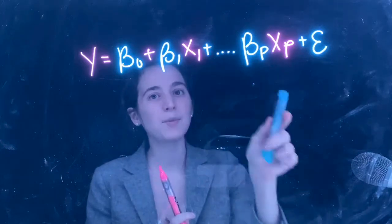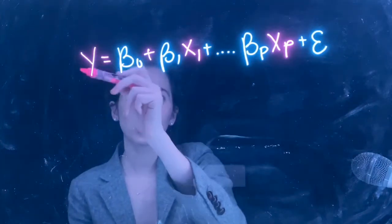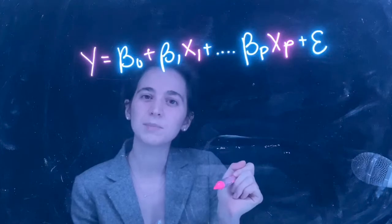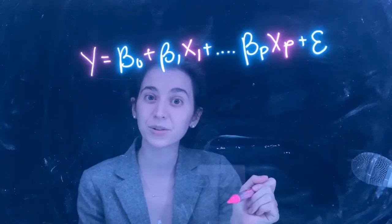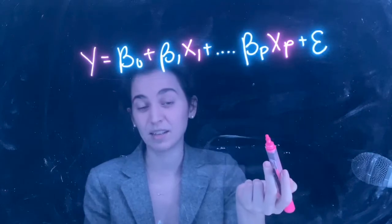This is the common way that you think of a linear model. Here y is our outcome, the x's are our observed predictors or explanatory variables, and then these beta coefficients are what we're estimating, and then of course we have this error term.